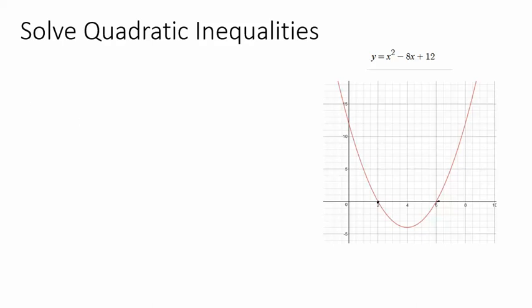In this video, we are going to solve quadratic inequalities. Let's remind ourselves what an inequality is — a less than, less than or equal to, greater than, or greater than or equal to. A quadratic equation is something in the form ax squared plus bx plus c, equal zero, where a is not equal to zero. Because if a was equal to zero, we would have a linear equation.